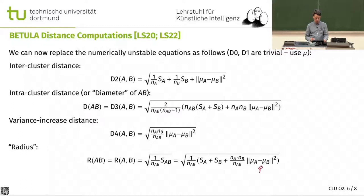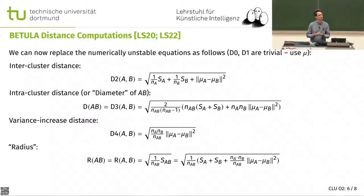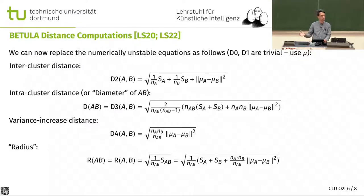The subtractions that remain in the equations are all squared Euclidean distances between centers. If those don't work numerically, the data is so pathological that nothing will work anyway. If the distance becomes badly behaved, it means the two points must be very close and the means are almost the same — which is the floating point limit for any algorithm. So Betula is not worse than k-means or any other method in this regard.